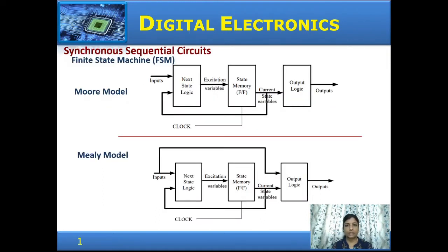Synchronous sequential circuits can be modeled in two ways. The models are also called finite state machines or FSMs. The two models are the Moore model and the Mealy model, also called Moore FSM or Mealy FSM, or Moore machine and Mealy machine.